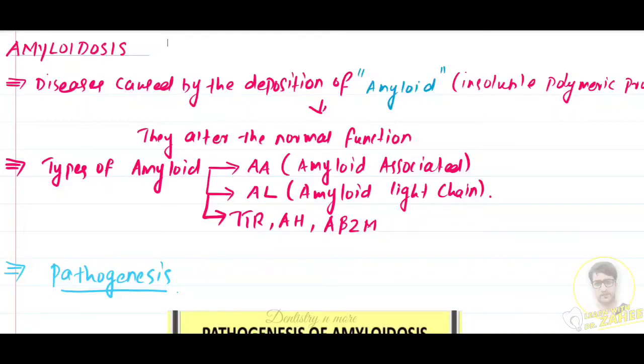Amyloidosis is associated with a variety of inherited and inflammatory disorders. Let's see the details. What this does to our body is it alters the normal function of the organ where this amyloid gets deposited. That is its bad effect - it alters the normal function of the organ where this amyloid gets deposited.